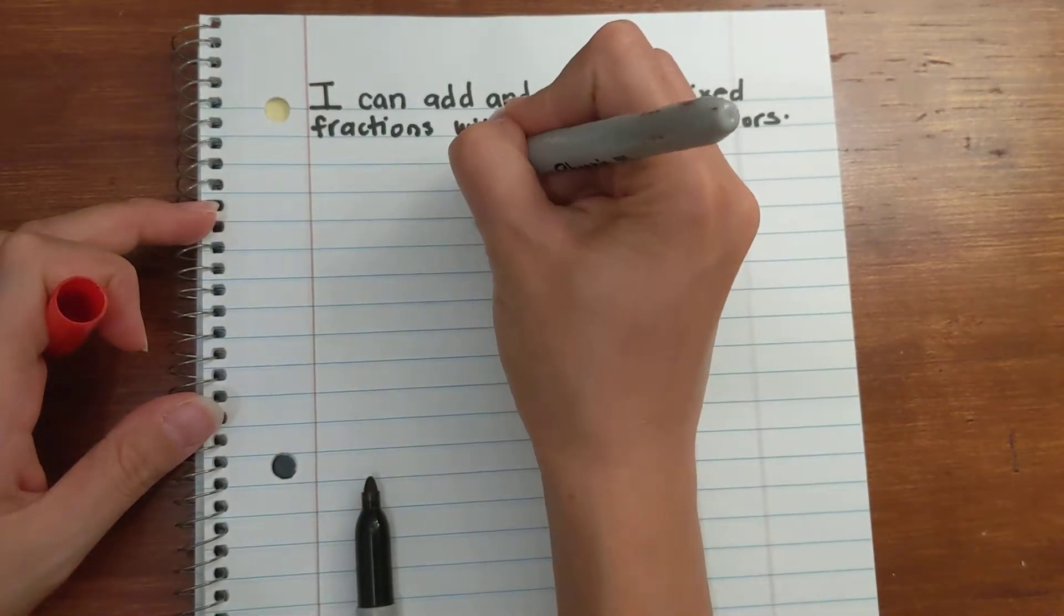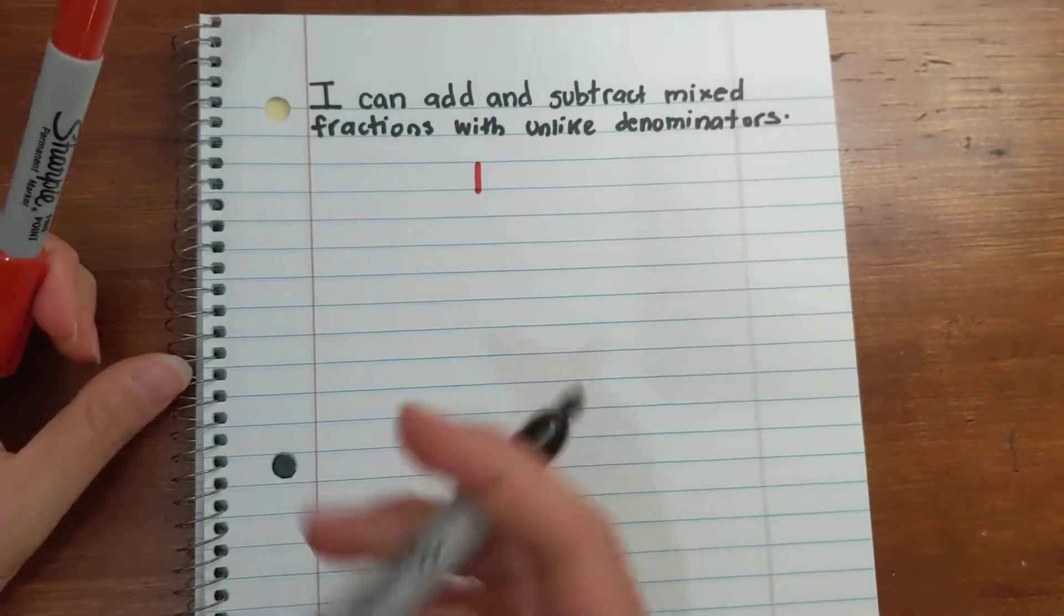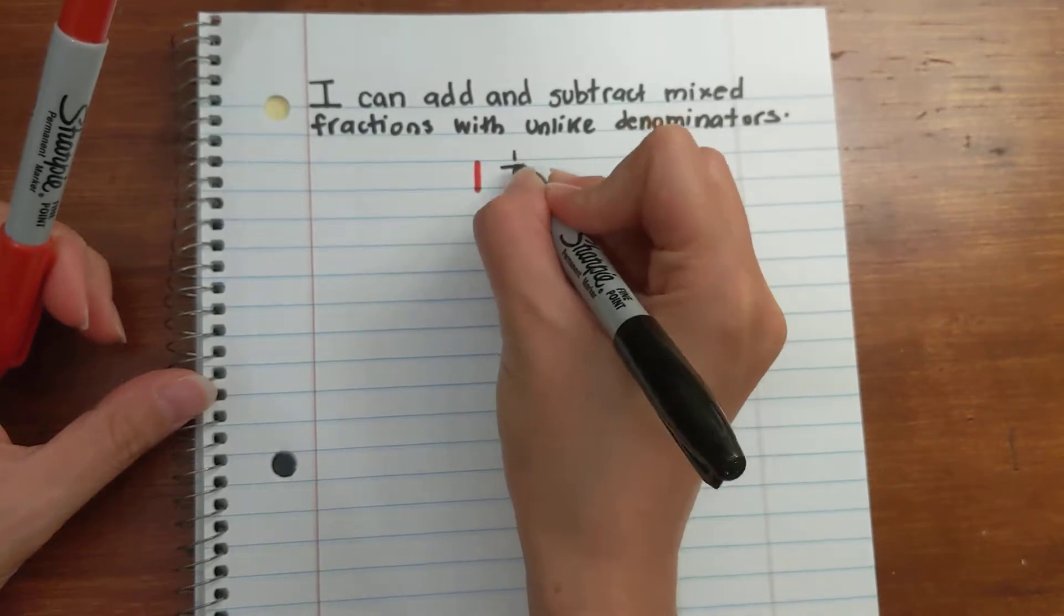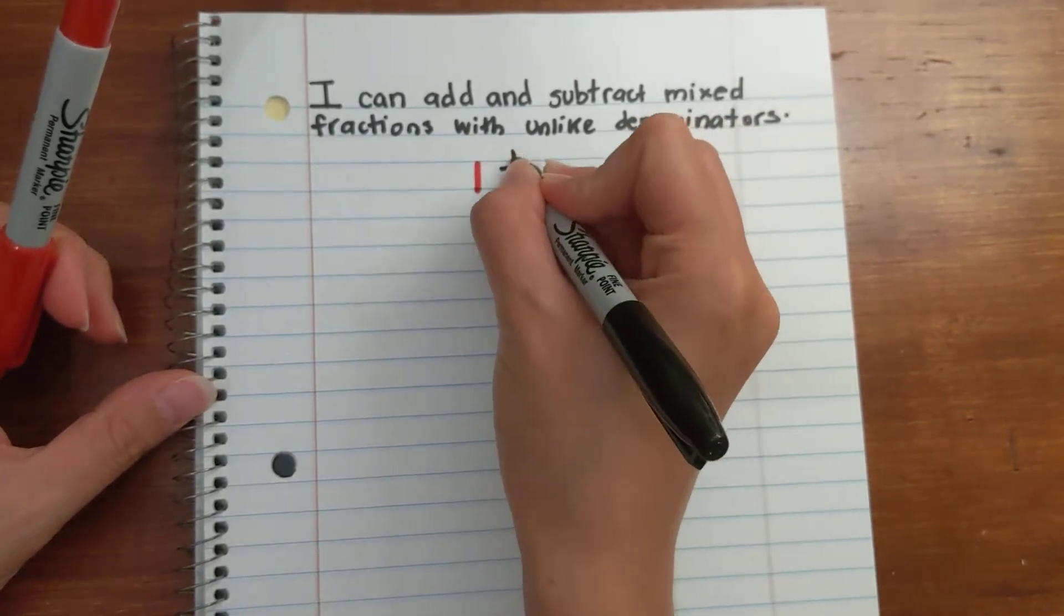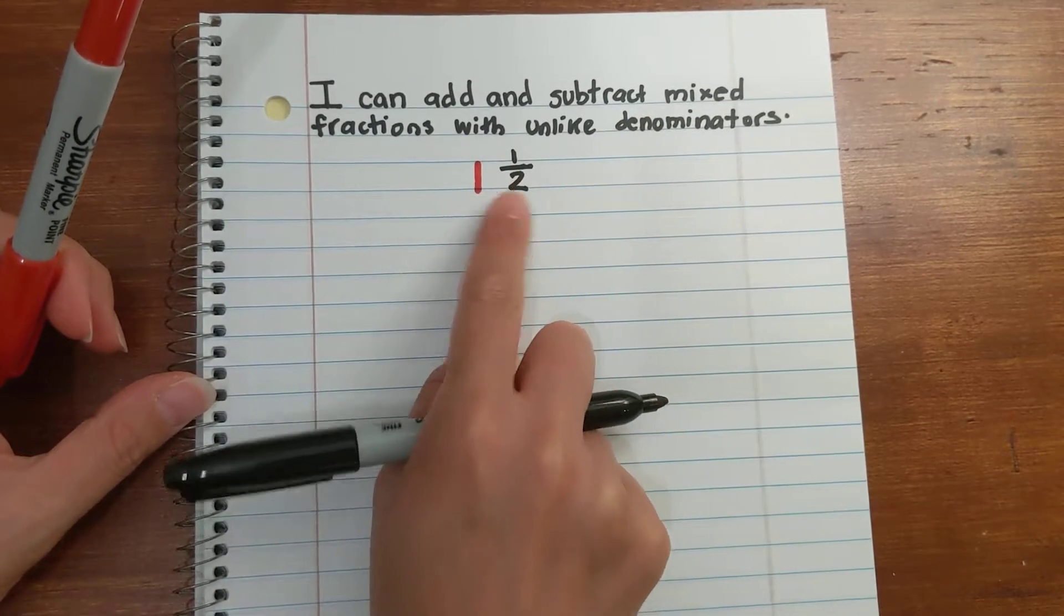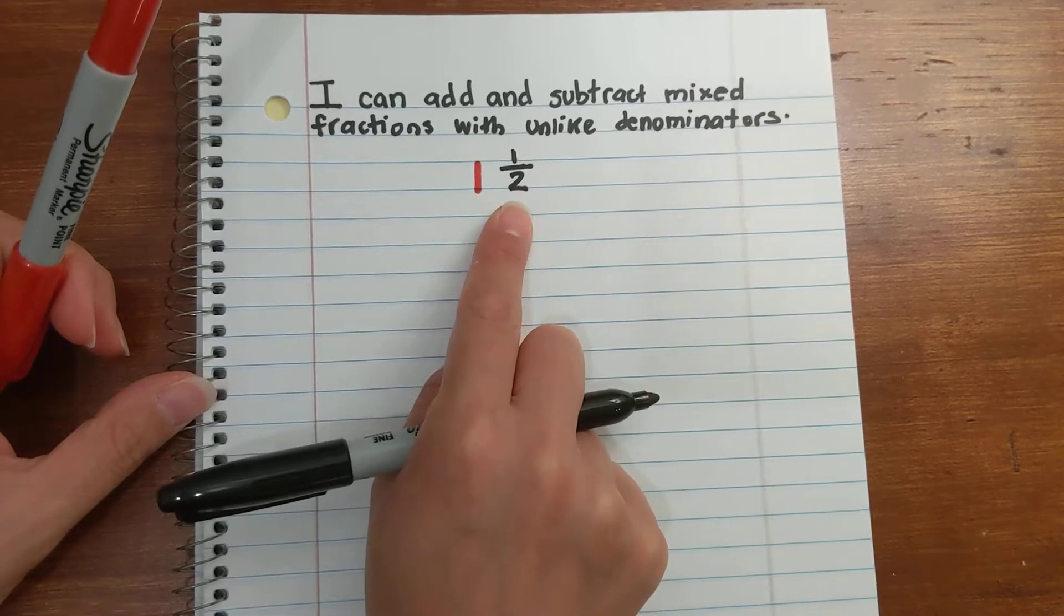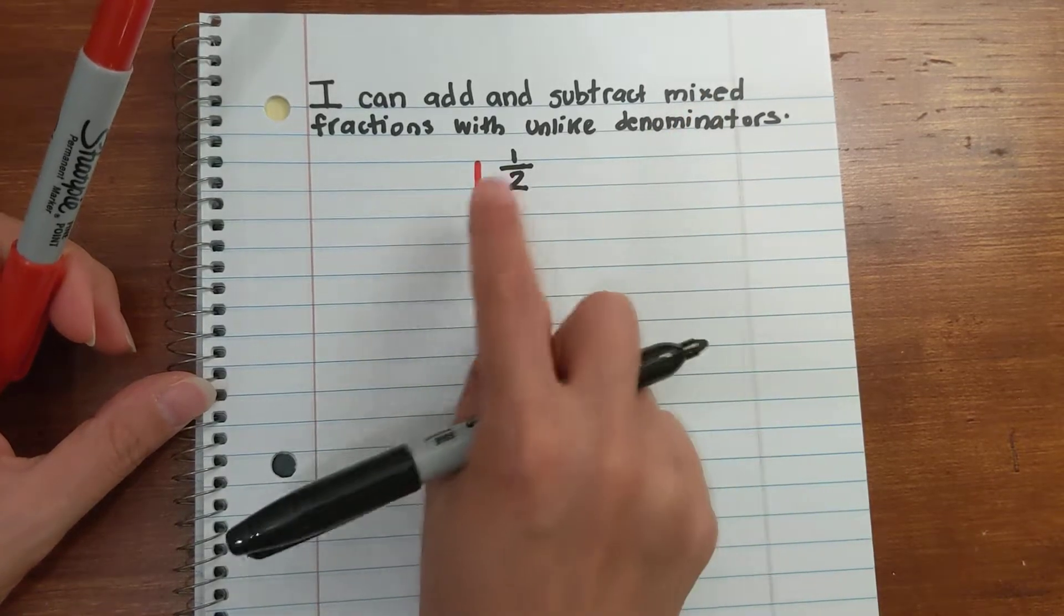A mixed fraction is when you have a whole number, which is, say, one, and a fraction - half. One and a half. I have a whole number and a fraction. That's a mixed fraction.